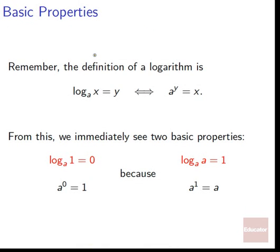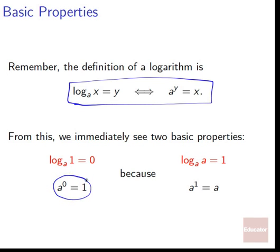Let's start off with some really basic properties. Remember, this is the definition we'll be working with the whole time. From this, we can immediately see two basic properties. Log base a of 1 equals 0, because a to the 0 equals 1 for anything — that was one of the things we figured out when working with exponents. Also, log base a of a is going to equal 1, because a to the 1 is just equal to a.